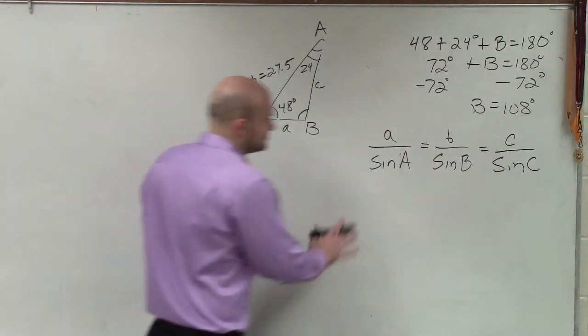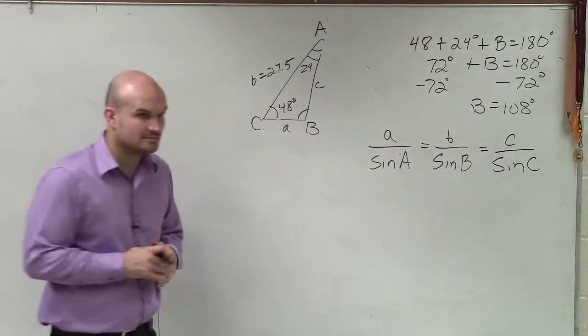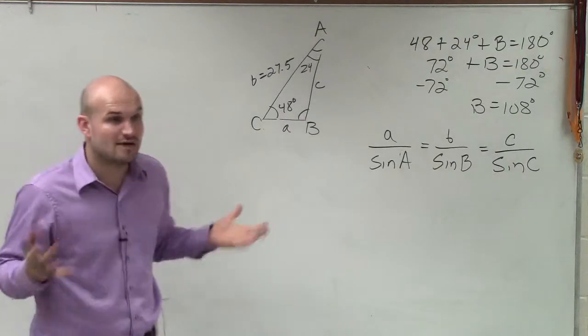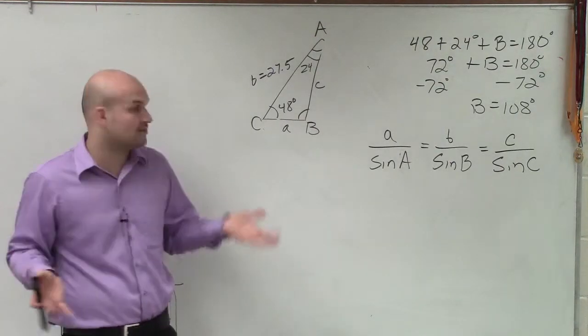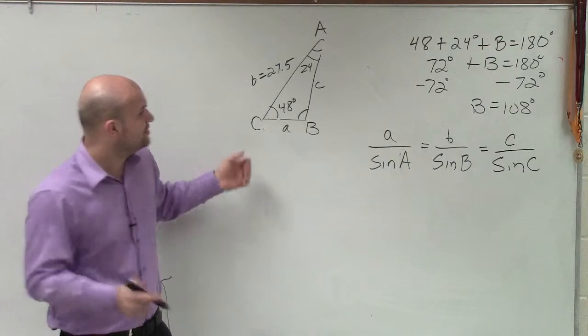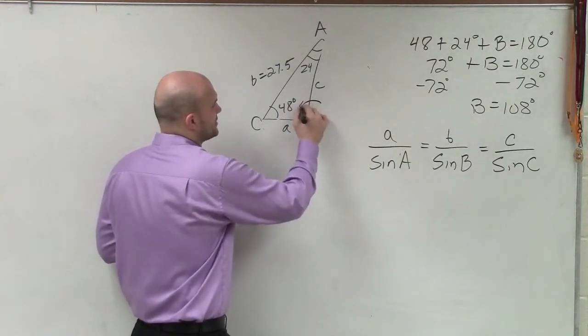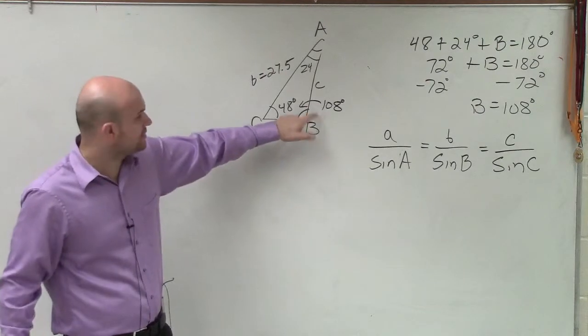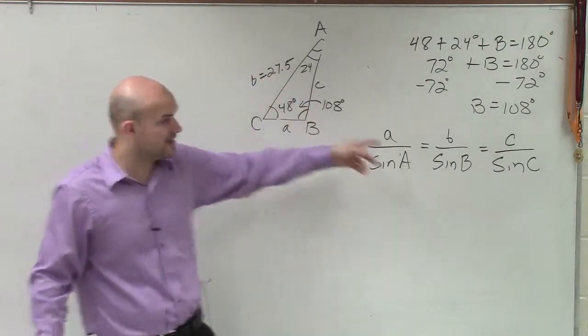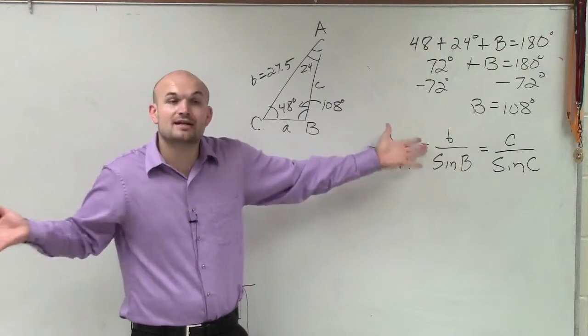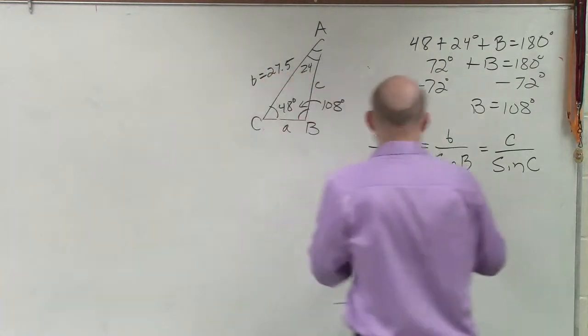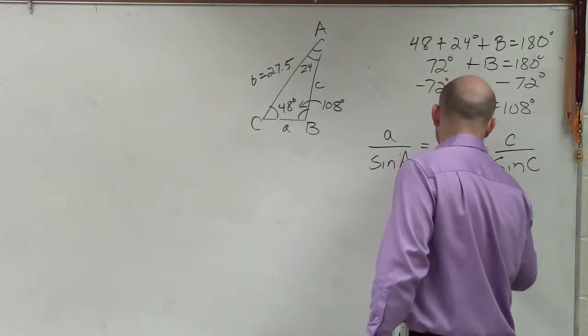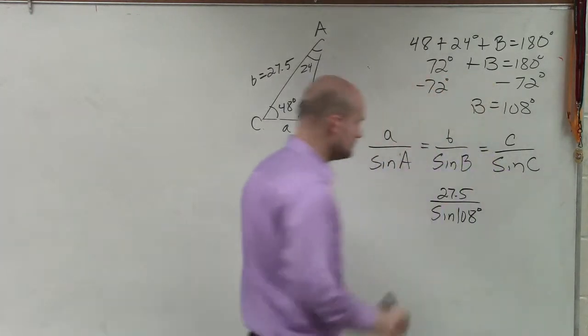So in this case, here's what we have. So now, when you're looking into solving the law of sines, you've got to make sure you have a ratio, or at least a ratio that is solved. Now, in this case, you can see that B, which is 108 degrees, we have B, 108 degrees, and its side length. So we have a ratio. We have one of these ratios. So now, I can use that to solve. So I say B, which is 27.5, over the sine of 108.